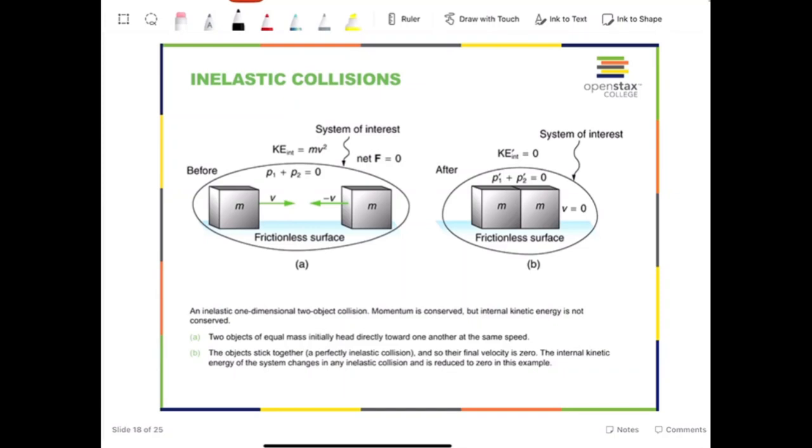The second type of collision is called the inelastic collision. That means the mechanical energy will not be conserved during the collision, and usually that means the energy is lost due to sound or light or heat produced during the collision, and they will reduce the total amount of mechanical energy or sum of kinetic energy and potential energy.